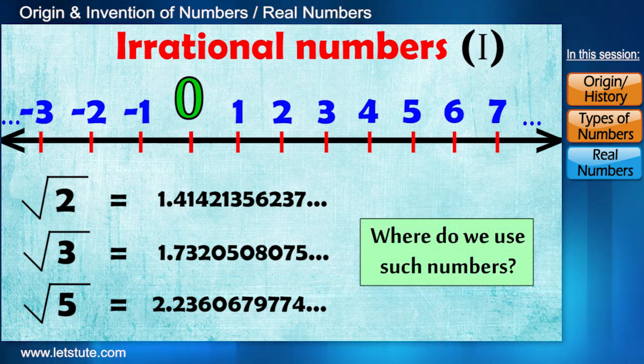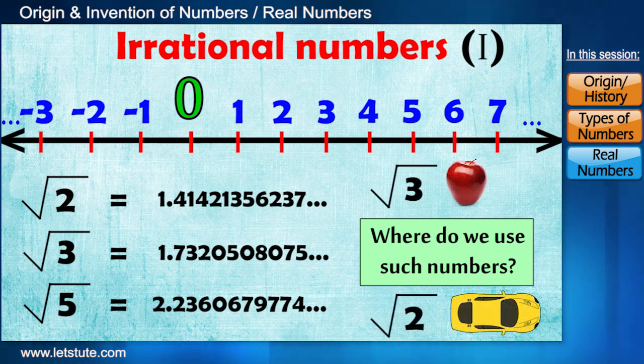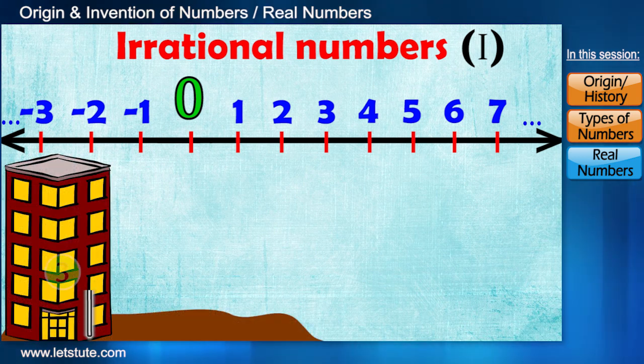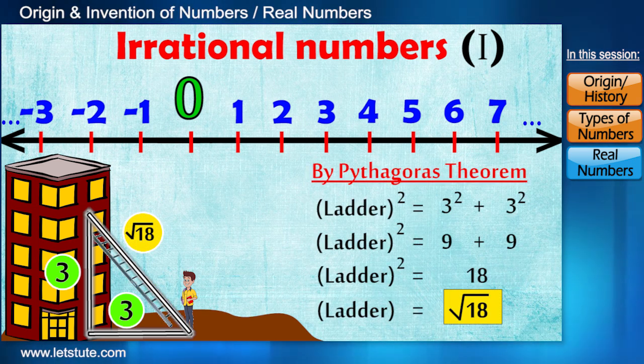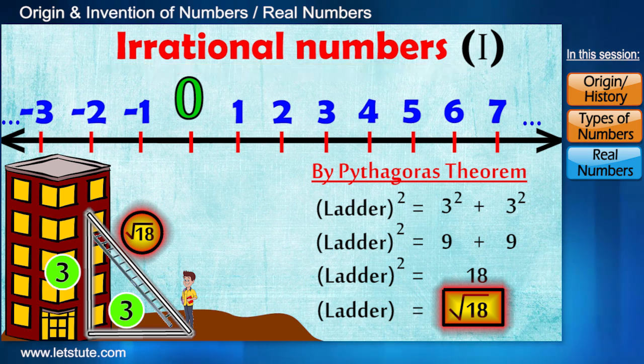Like rational numbers, there are infinitely many irrational numbers too. But the main question is, where do we use such numbers? Because we never say that we have root 3 apples or root 2 cars. So let us suppose that a window of a house is at 3 unit height and you are standing 3 units away on the ground. So here the length of the ladder will be an irrational number. I hope you all are getting me.